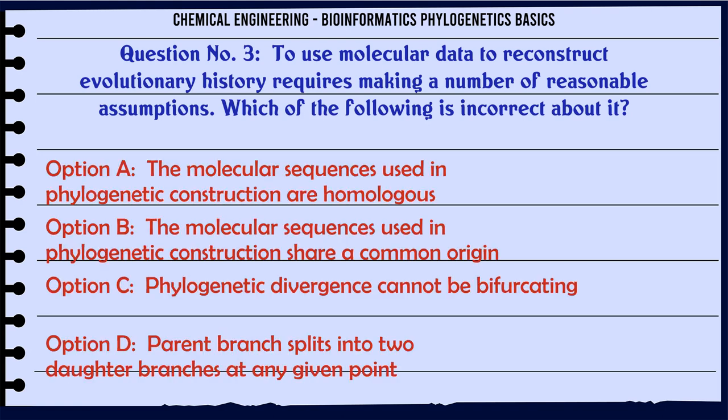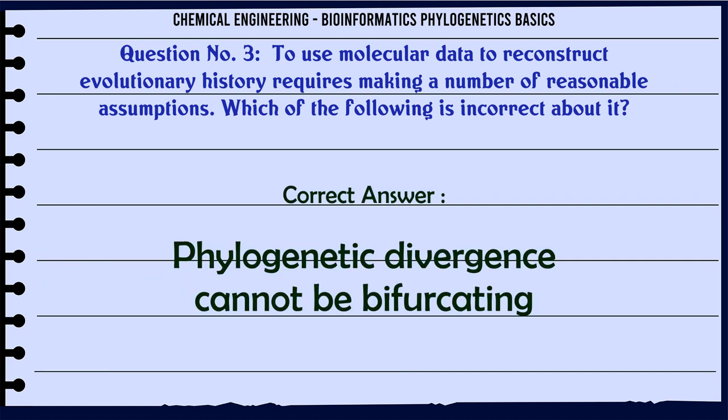To use molecular data to reconstruct evolutionary history requires making a number of reasonable assumptions. Which of the following is incorrect about it? a. The molecular sequences used in phylogenetic construction are homologous. b. The molecular sequences used in phylogenetic construction share a common origin. c. Phylogenetic divergence cannot be bifurcating. d. Parent branch splits into two daughter branches at any given point. The correct answer is: Phylogenetic divergence cannot be bifurcating.